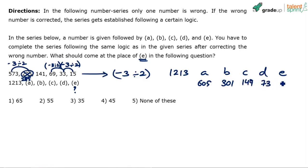73 minus 3 is 70, divided by 2 is 35. So I think the whole question is about minus 3 divided by 2. You should crack this logic and apply it to get the answer as option 3.